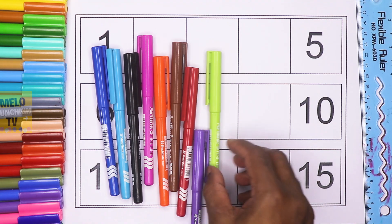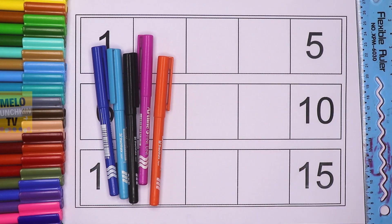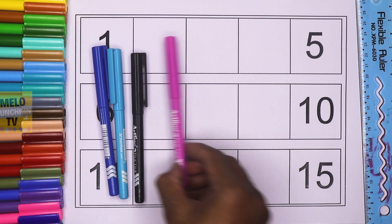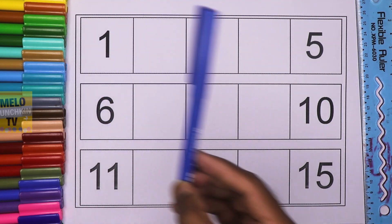This is apple green, purple color, red color, brown color, orange color, pink color, black color, sky blue color, dark blue color.